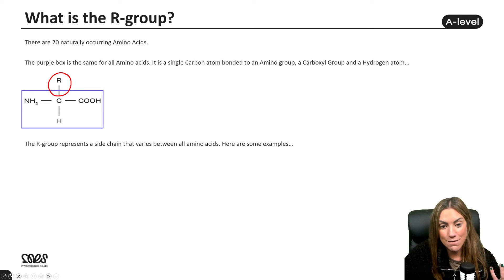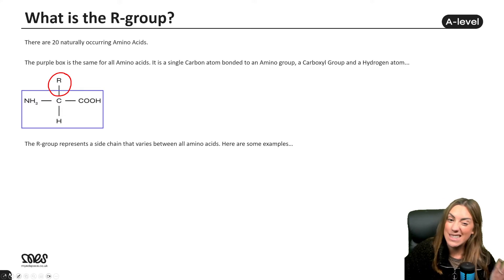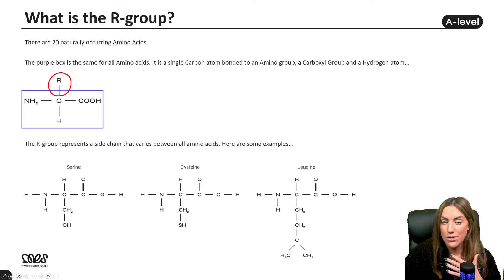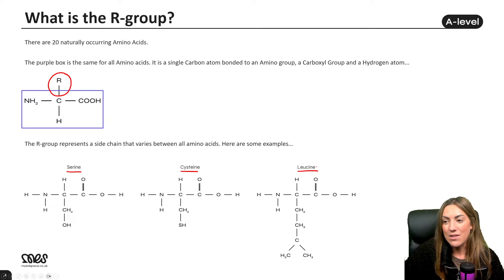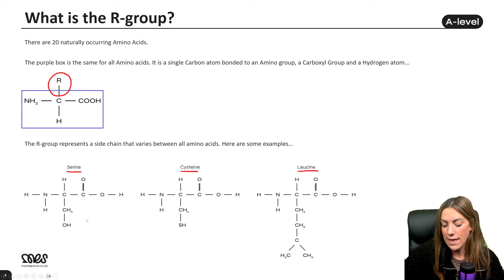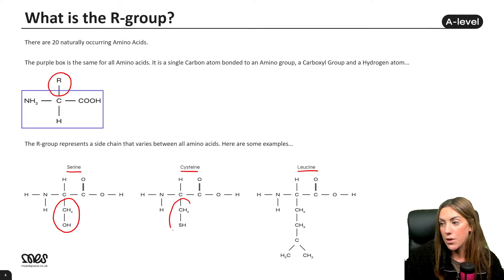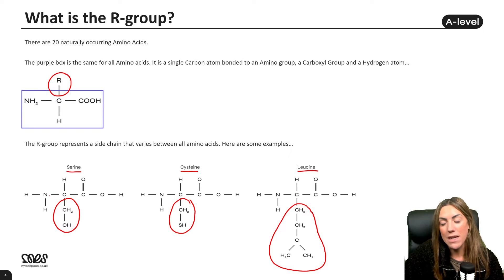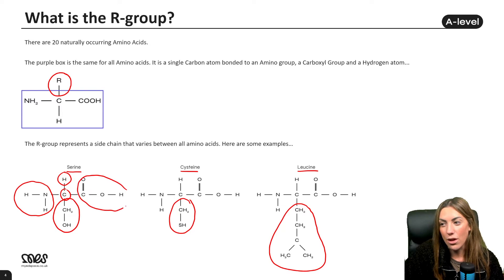Luckily, you don't have to learn all the different amino acids, their names, or their specific R groups. All you need to draw is the general structure and understand that the R group represents the variable side chain. For interest, here are three examples: serine, cysteine — the one that contains sulfur in the R group — and leucine, where the entire side section is the R group. The rest of each amino acid — amine group, central carbon, hydrogen, and carboxyl group — you should recognize.